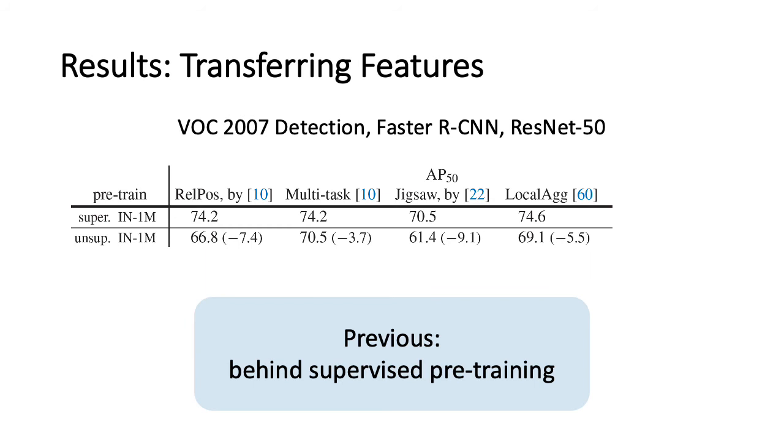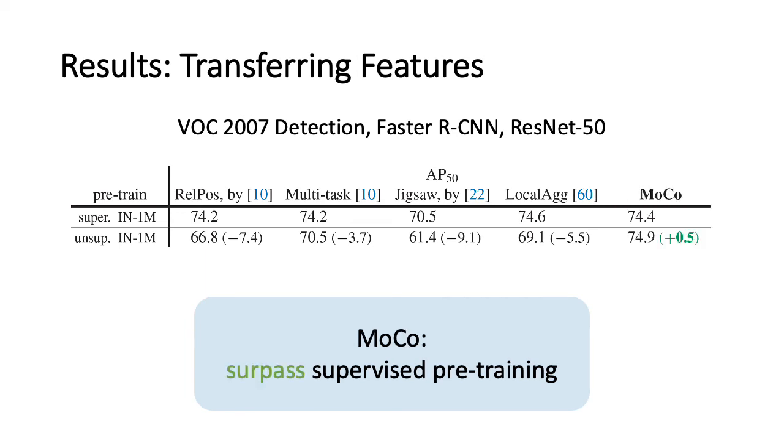Beyond ImageNet, it is important to evaluate unsupervised representation learning by transfer learning. Here we show the results on VOC object detection using Faster R-CNN, comparing previous unsupervised pre-training methods with their supervised baselines. All previous methods are behind supervised pre-training. However, unsupervised pre-training using MoCo can surpass the supervised counterpart in this long-standing challenge.